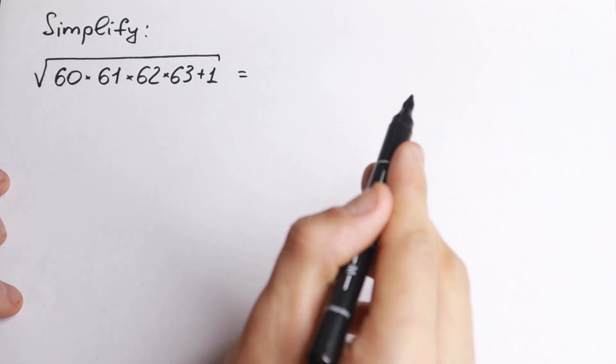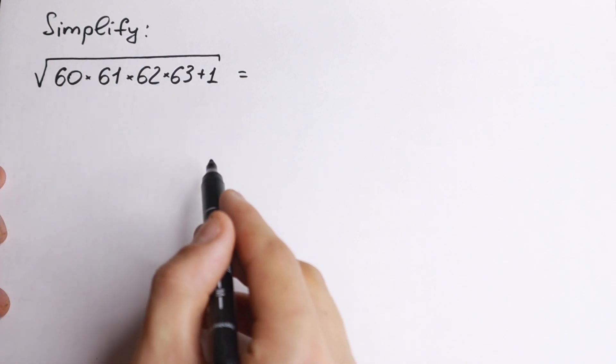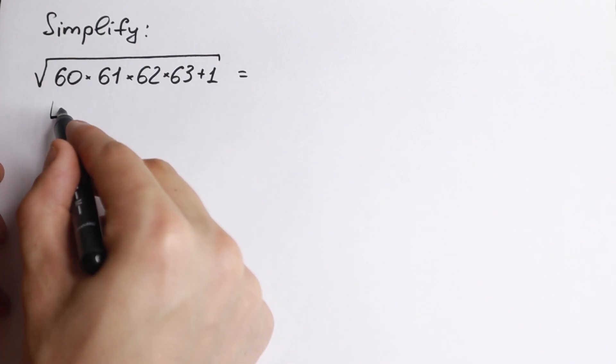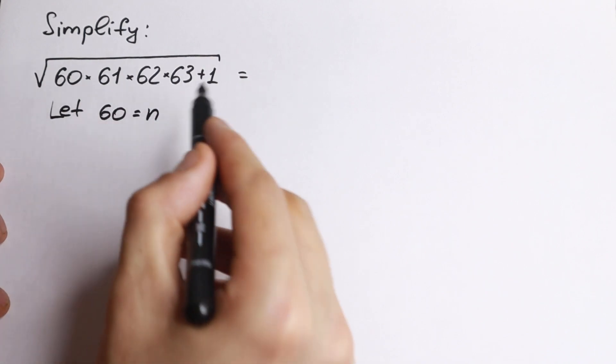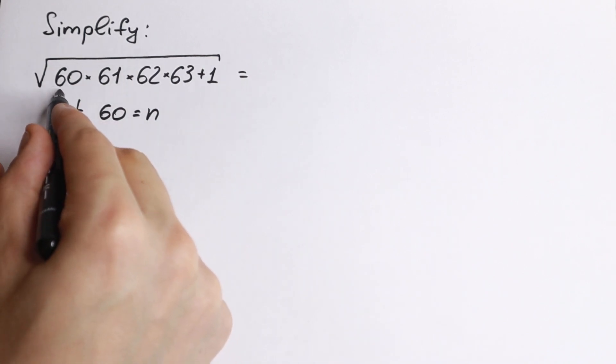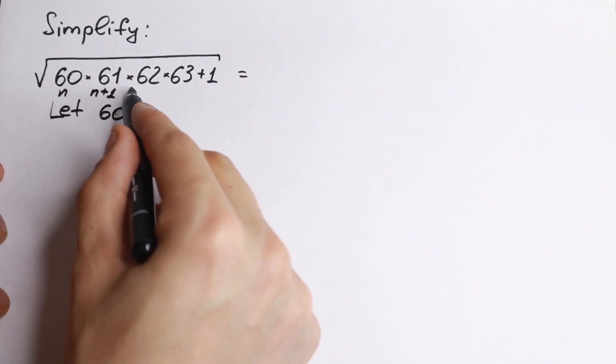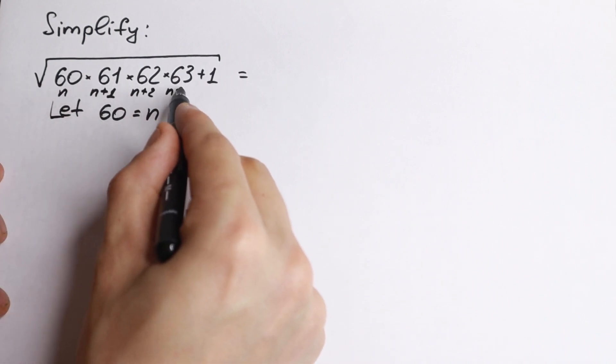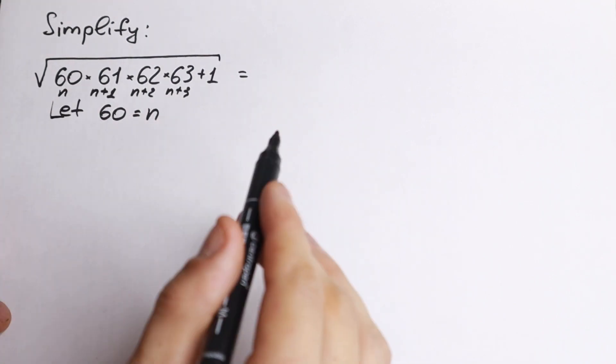First of all, I want to show you this trick. Take a look closely, we have real close numbers, 60, 61, 62, 63 and if we go with substitution, so let 60 equal to n, for example then look closely, right here n, so right here 61, this is n plus 1 right here n plus 2 and n plus 3, yeah? So I hope you understand this step, if you're talking about substitution, this is our moment.